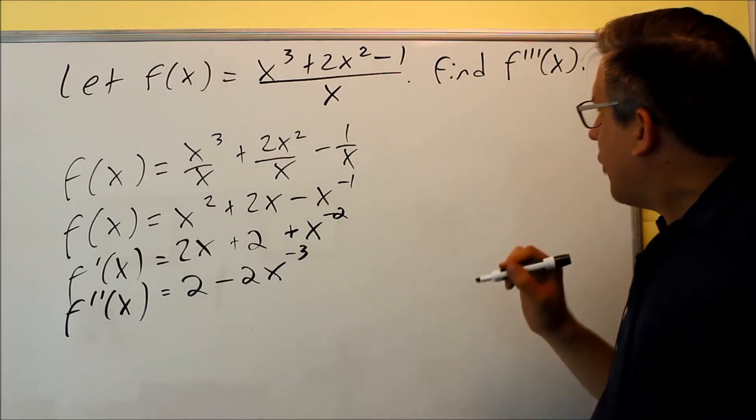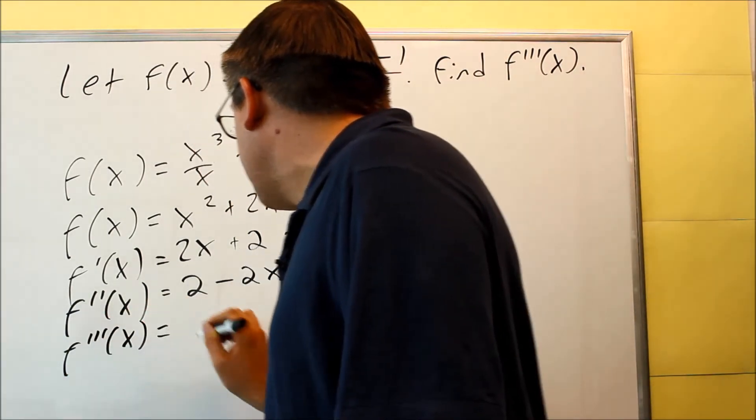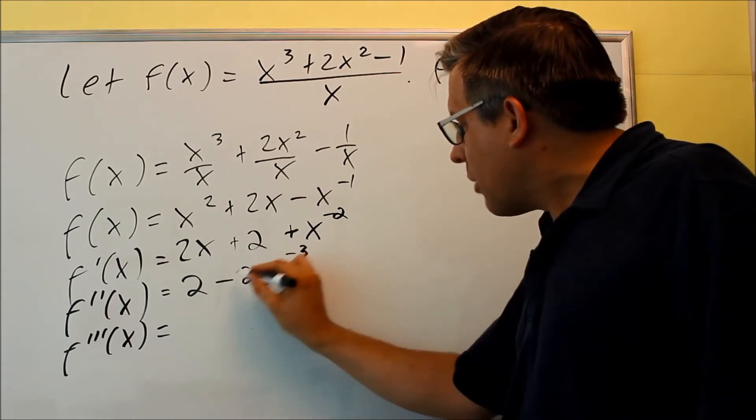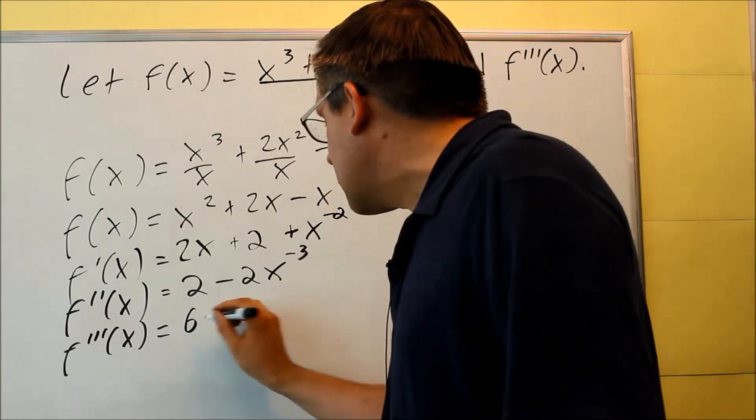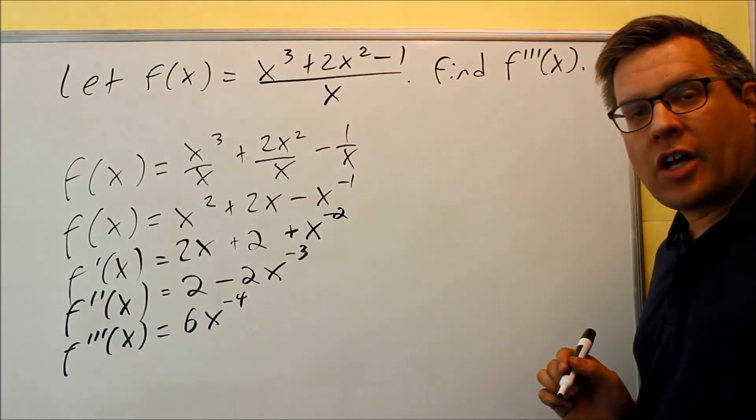We're going to do one more derivative. Again, you want to find the third derivative. So now we're going to do the third one. Derivative of 2 is 0. Negative 3 comes down and multiplies by negative 2, you'll get a positive 6. Subtract 1 from that power and you get negative 4.